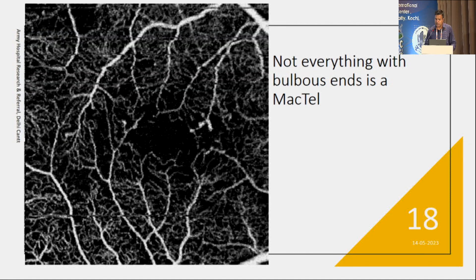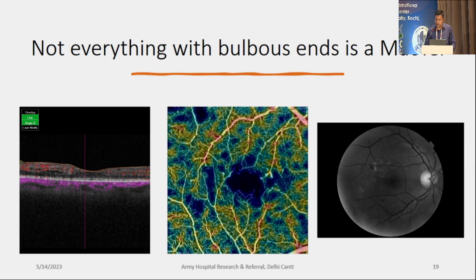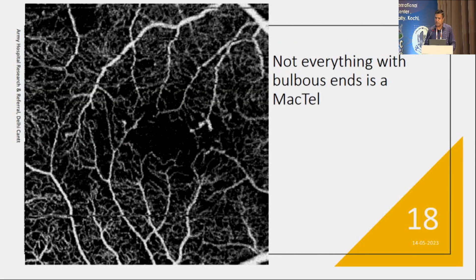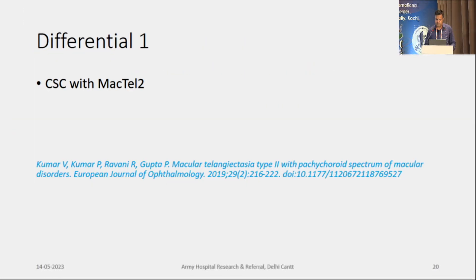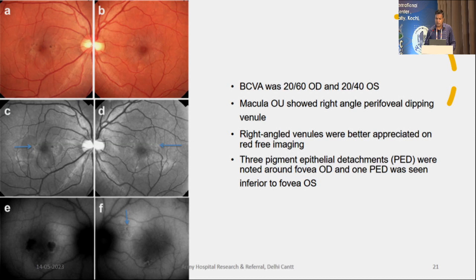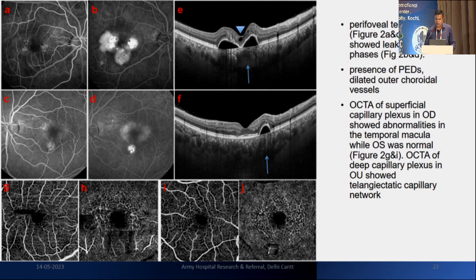Not everything bulbous is MacTel — in a classical case of diabetic retinopathy, this kind of bulbous change occurred simply because of capillary dropout and reflex angiogenesis. Regarding differentials — this is our published work: CSC can occur along with macular telangiectasia. In a patient with 20/60 vision in right eye and 20-something in left, showing right-angle draining venules and few PEDs around the fovea, the OCT gives a mixed picture. But on OCT angiography, you can clearly see there are no BVNs, and the changes of MacTel are lying alone — confirming a diagnosis of CSC with MacTel.